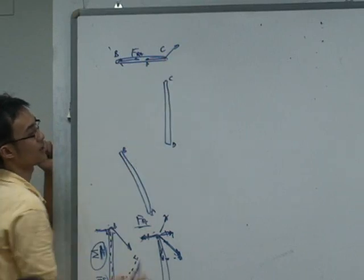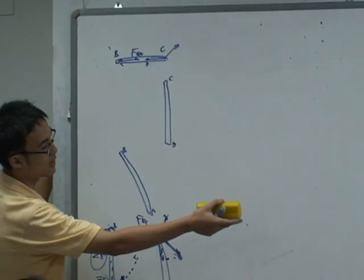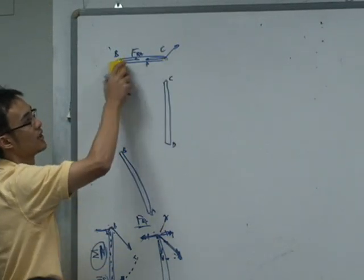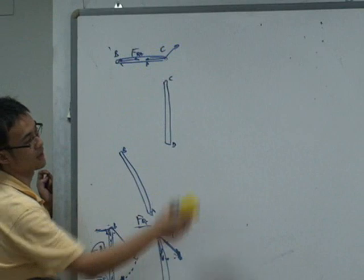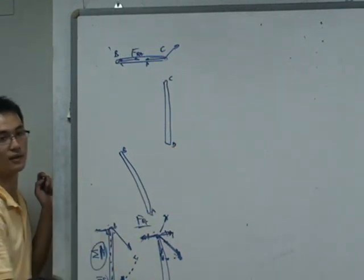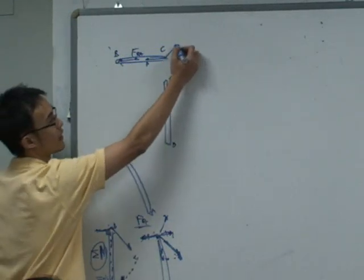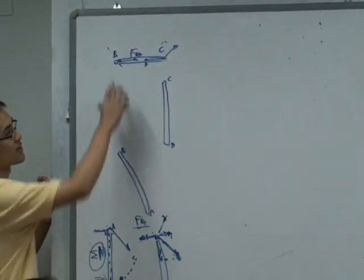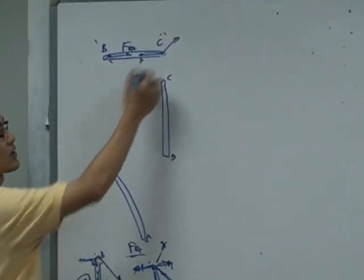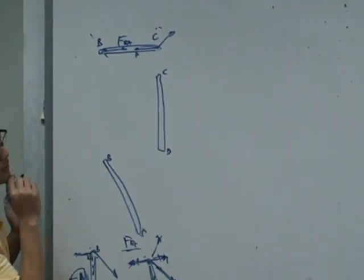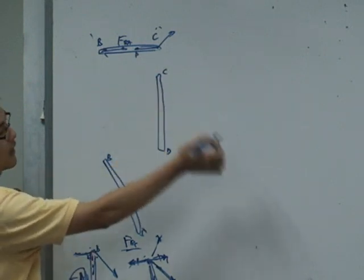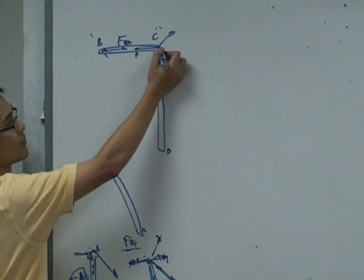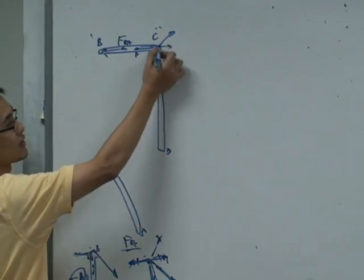So force P definitely should be in this direction. How about member CD? Component CD will also give a force to this BC, right? So the direction may be in this direction or in other directions. But since it is a two-force member, the direction cannot be in other directions.